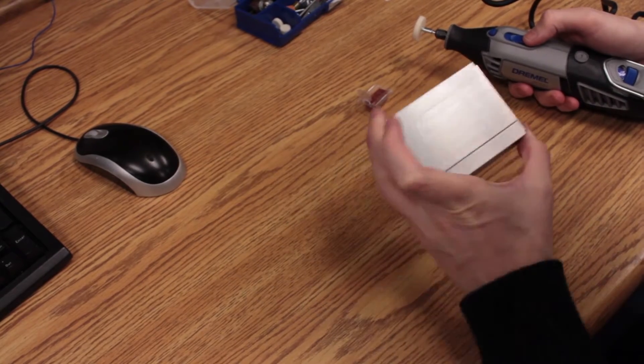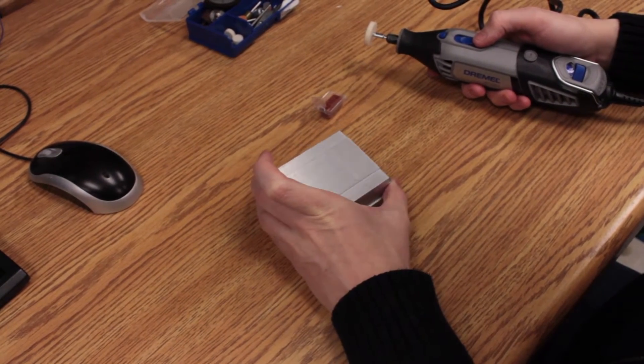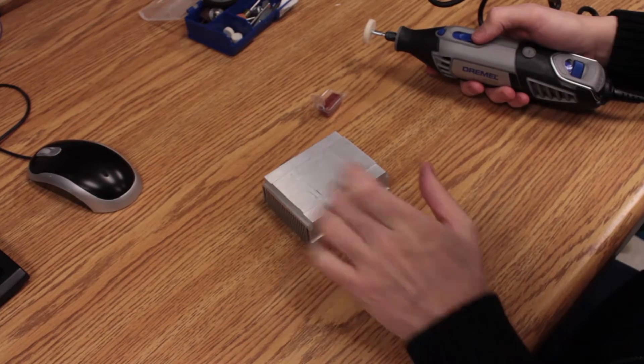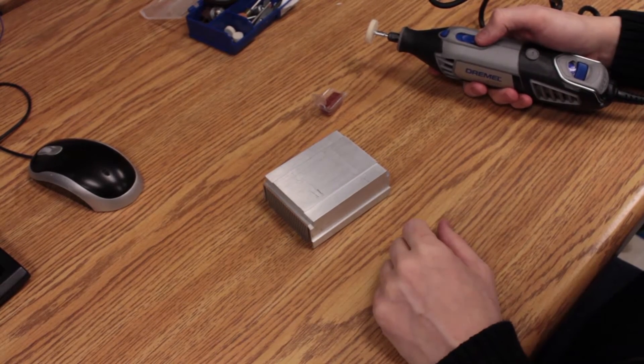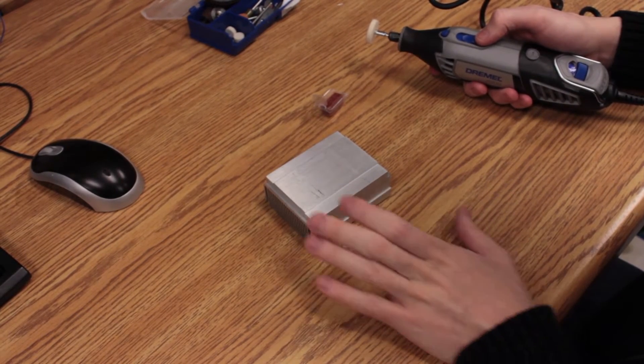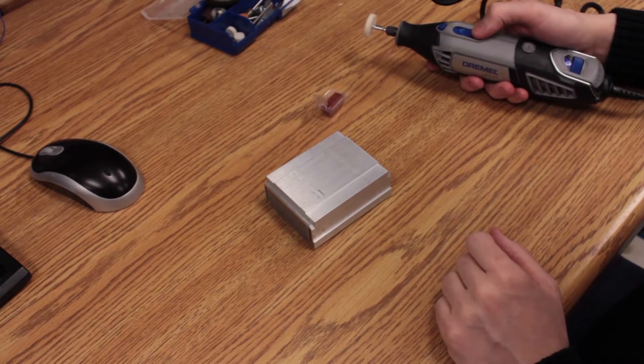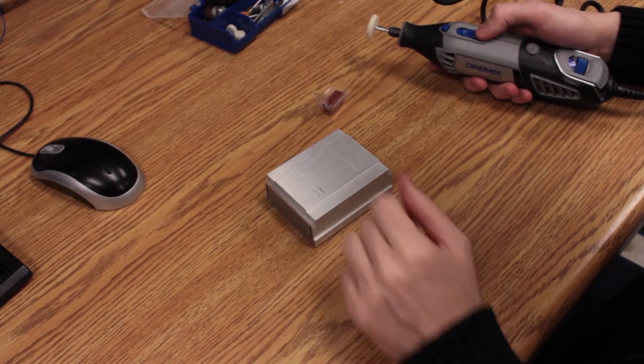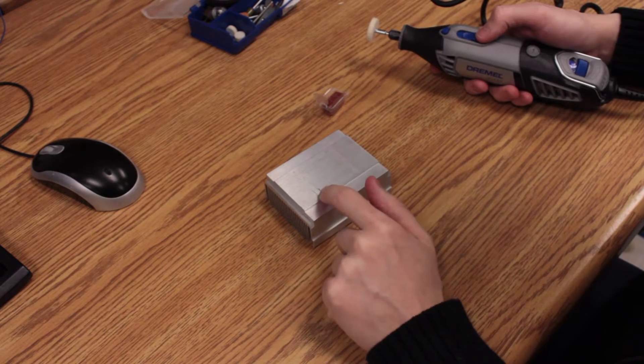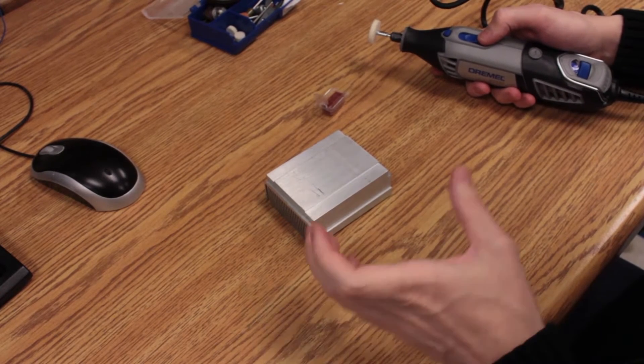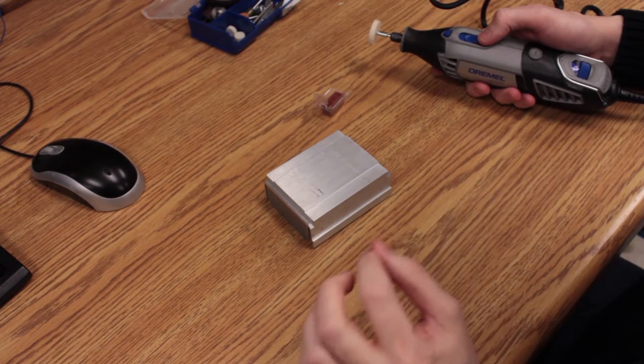Alright, so this is our heatsink and for most of you mounting the LED directly to it would be fine. However, I like my heatsinks to have a mirror finish on them before I mount anything on them. The reason why is because there's small grooves in the heatsink and those grooves can actually create small microscopic air gaps